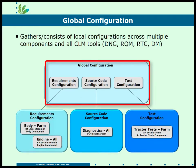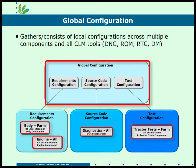The global configuration for my farm tractor has the body for the farm, it has the one engine configuration, it has a source code configuration, and it has an RQM or test configuration specific to farm. The global configuration lets me say I'm doing my global farm tractor configuration — these requirements, these streams from these components, this source, and this set of versioned tests specific to my farm.